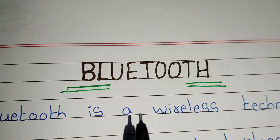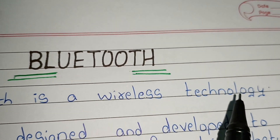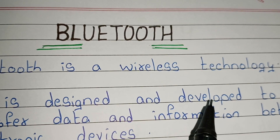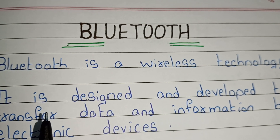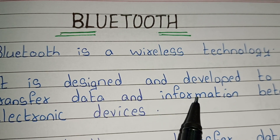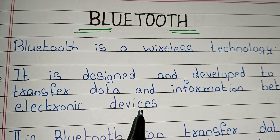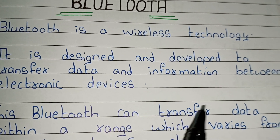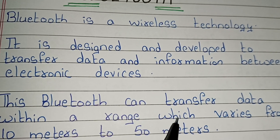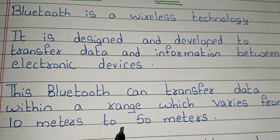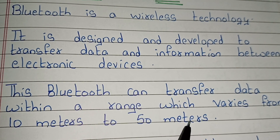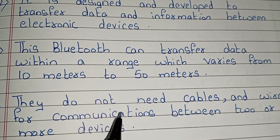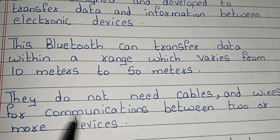Bluetooth is a wireless technology. It is designed and developed to transfer data and information between electronic devices. This Bluetooth can transfer data within a range which varies from 10 meters to 50 meters. They do not need cables and wires for communication between two or more devices.